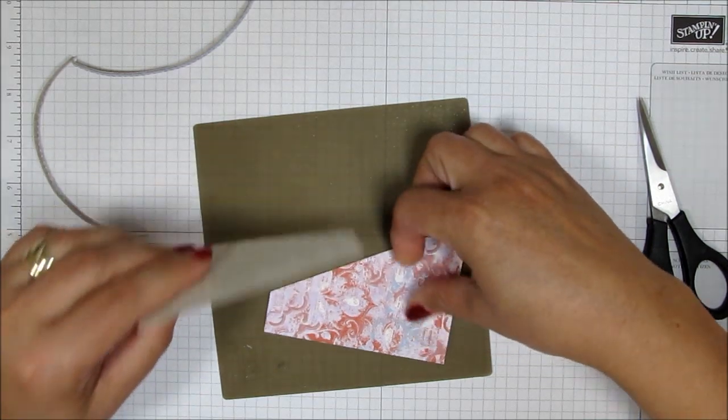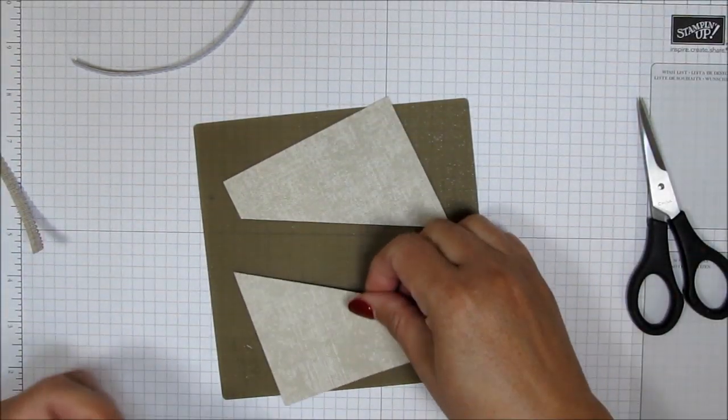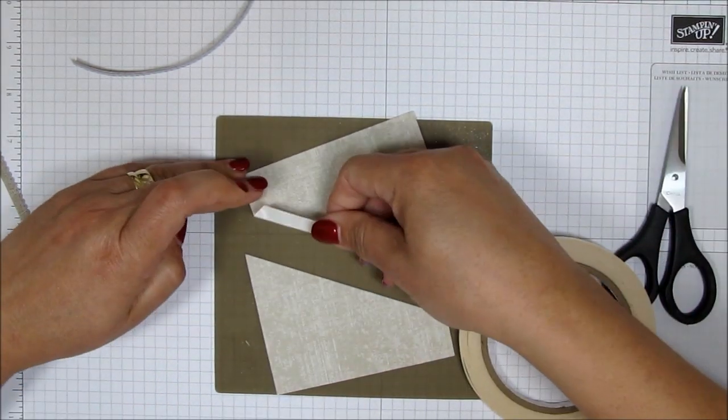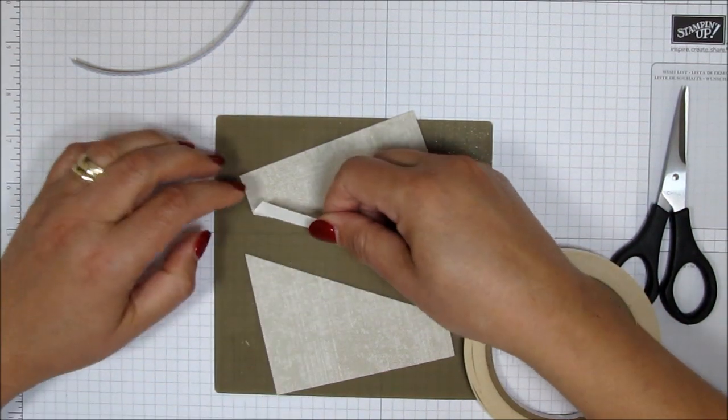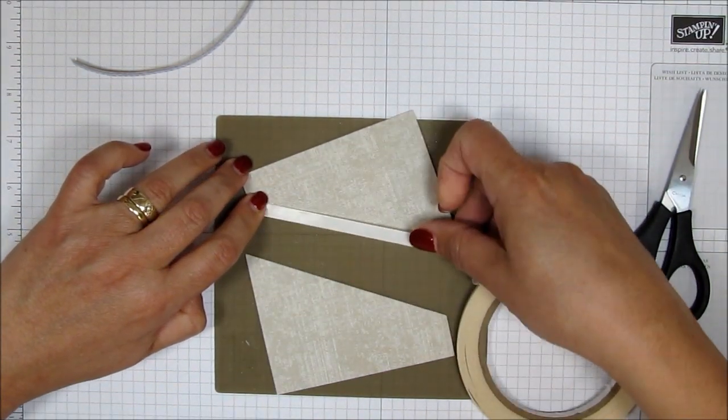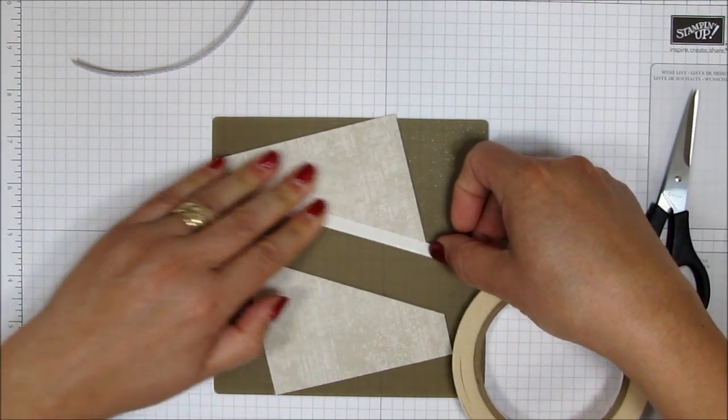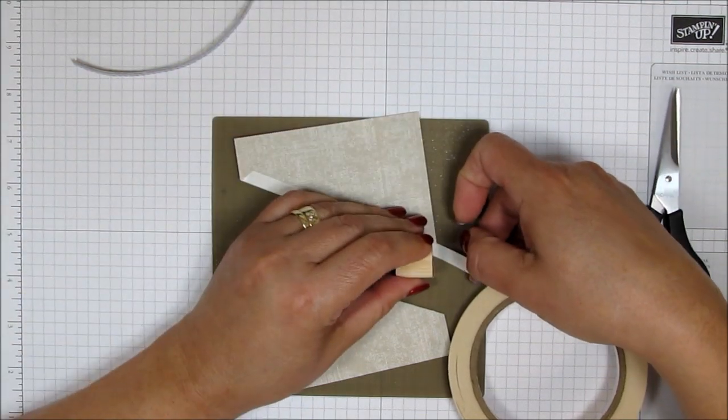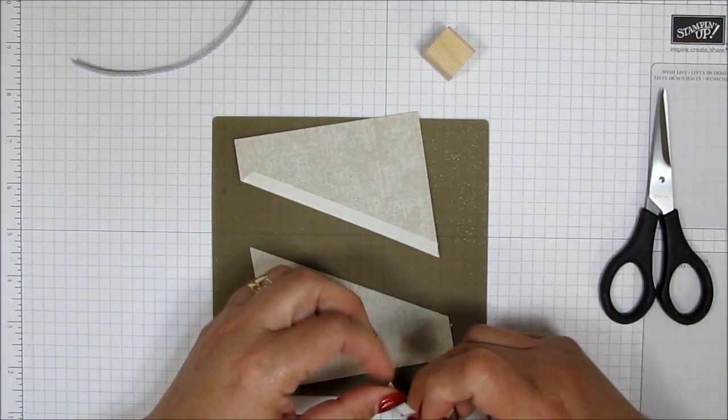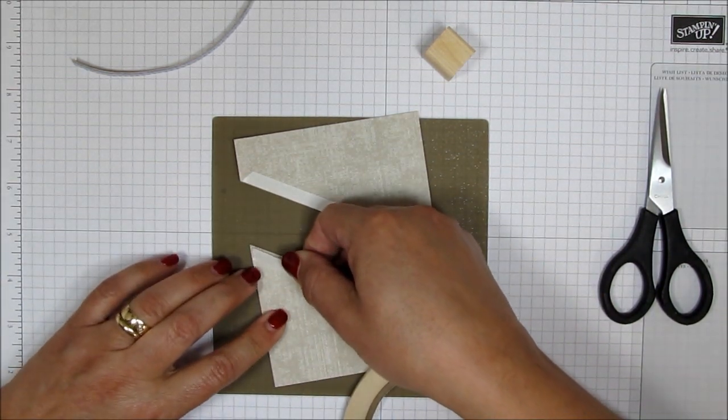So now this is going to go under here just so that the little scallops are going to show. And so I'm going to put some tear and tape all along the slanted edges. Yeah, we'll just start right here. And I'm going to put it right on the edge. Try not to go over the edge. Just put it right on the edge. And I'm going to tear it off with my little block here. And I'll put some on the other side.